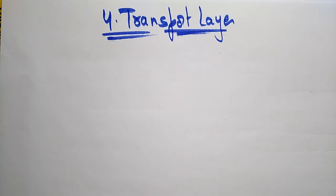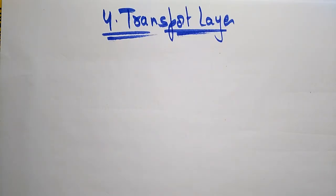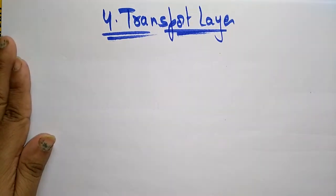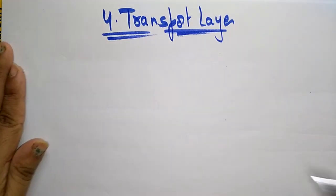Hi students, coming to the fourth layer, that is the Transport Layer in the OSI reference model. The name itself is indicating that we are transporting the information, sending it from source to destination. Everyone — the network layer, data link layer — is sending information, so what about this transport layer?